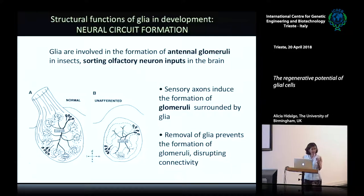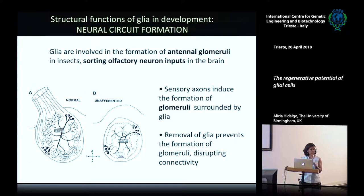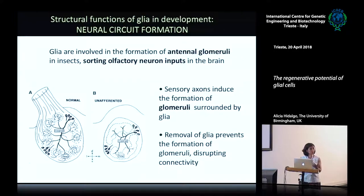A very similar system exists in the olfactory system. Here are the olfactory glomeruli of a moth. The olfactory inputs come into the antennal lobe and are organized into glomeruli according to olfactory receptor type. These glomeruli are organized and maintained separate by glial cells. If you remove the glial cells, you destroy the organization of the glomeruli. This is very important to sort olfactory inputs and allow their proper connectivity patterns.